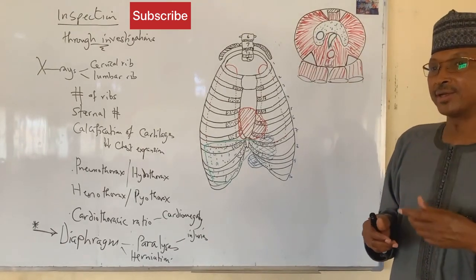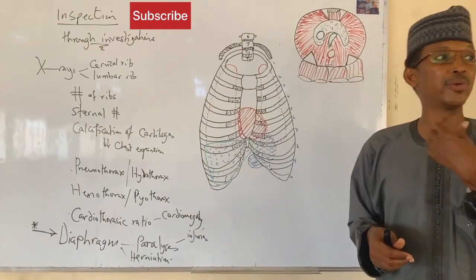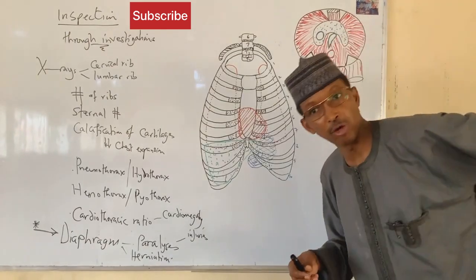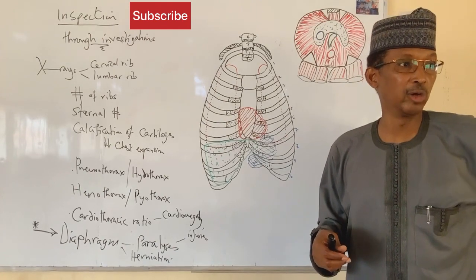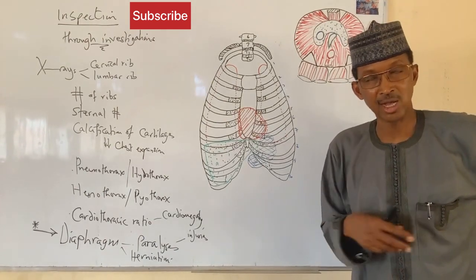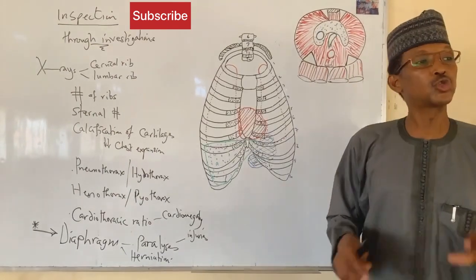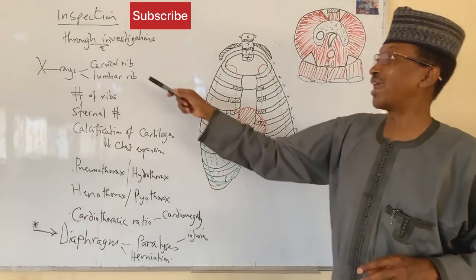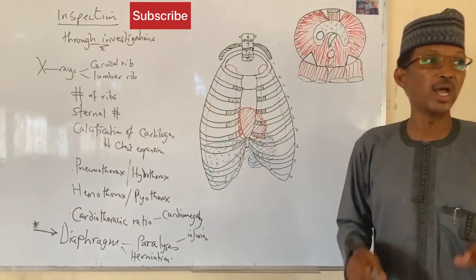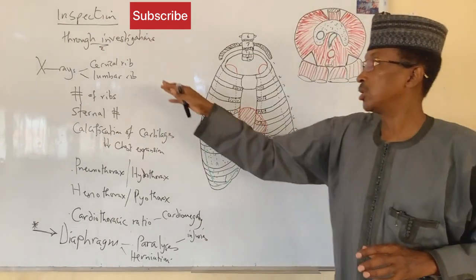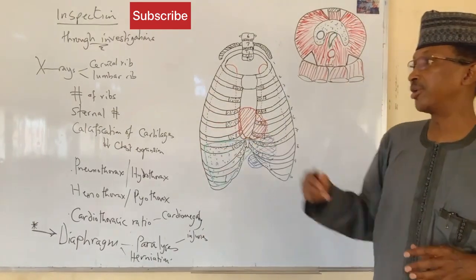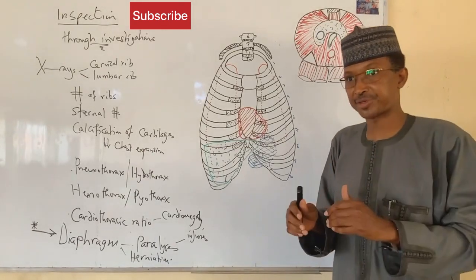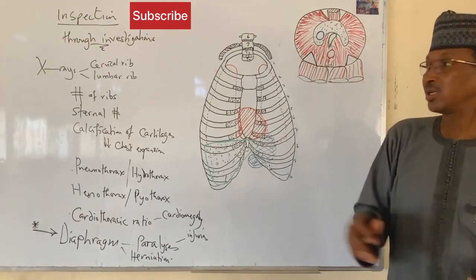If you remember, I told you that one can palpate the cervical rib on the chest, and you can also palpate the lumbar rib at the back. Through X-ray, you can also inspect and see an extra rib — either a cervical rib or a lumbar rib. So X-ray can clearly show you a cervical rib, a lumbar rib, or a combination of all. Similarly, if there are fractures along the ribs or their corresponding cartilage, X-ray can also show you those.